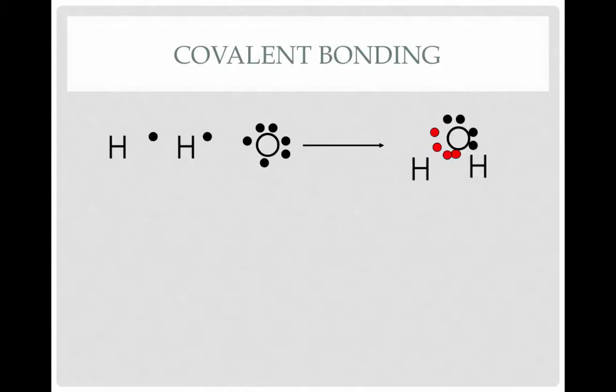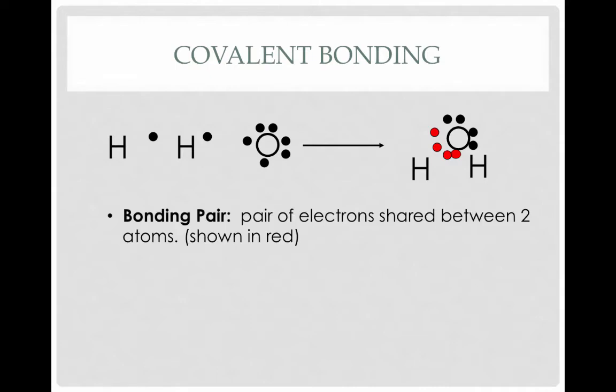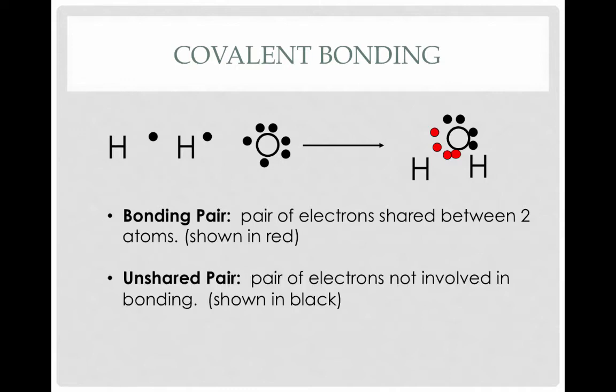Let's look at an example. Here we have two hydrogen atoms, each with one valence electron, and one oxygen atom with six valence electrons. Since oxygen needs two more valence electrons to achieve eight, and hydrogen needs one more each to achieve its duet, these atoms can share electrons. Each hydrogen will share one electron with oxygen, and oxygen will share one electron each with each hydrogen. We have bonding pairs — shown in red, shared between two atoms — and lone pairs shown in black, which are not involved in bonding.